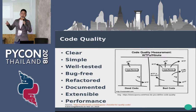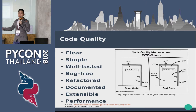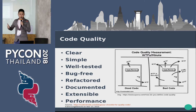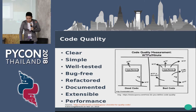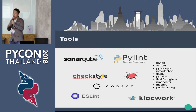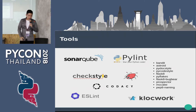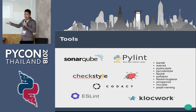Some code can execute in a short time, and some code takes a long time to learn. If code quality is high, that means performance is good. There are many tools for this, such as SonarQube, Pylint, and Textar, and something like that.